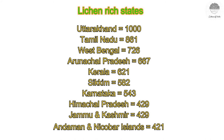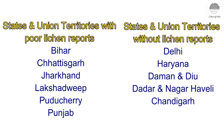However, many Indian states and union territories have very little lichen diversity or have not been explored. Bihar, Chhattisgarh, Jharkhand, Lakshadweep, and Puducherry have no lichen records at all. Delhi, Haryana, Daman and Diu, Dadra and Nagar Haveli, and Chandigarh have very few or no records. This does not mean these places lack lichens — they simply have not been sufficiently explored.